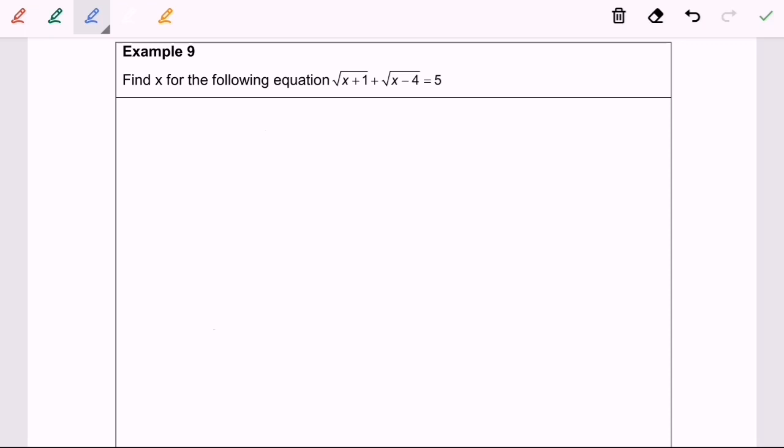So we have the equation. First step, I'm going to rearrange. We will have square root of x plus 1 equals 5 minus square root of x minus 4.